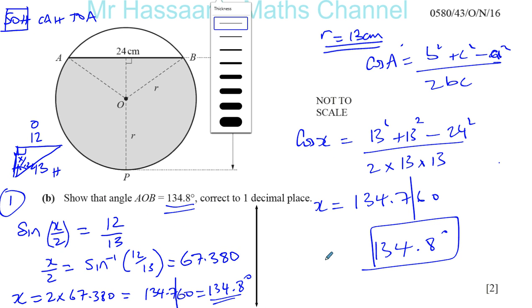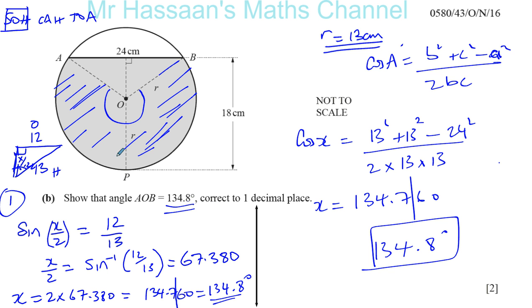It says calculate the area of the major sector OAPB. Now a sector of a circle is like the pizza slice. So this is a pizza slice here, OAB. That is the minor sector, it's the smaller one. OAPB is this big size here, this whole big section here. This is like the greedy person slice. So we've got to find the area of this sector, this region that I've shaded in blue. What do we know? We know this angle now is 134.8, about 134.760. I'll write it in this more accurate form. So the angle on the inside will be 360 minus that.